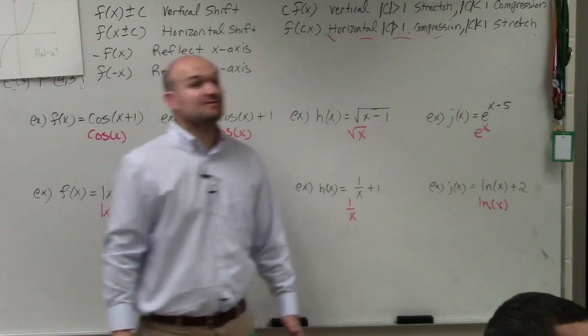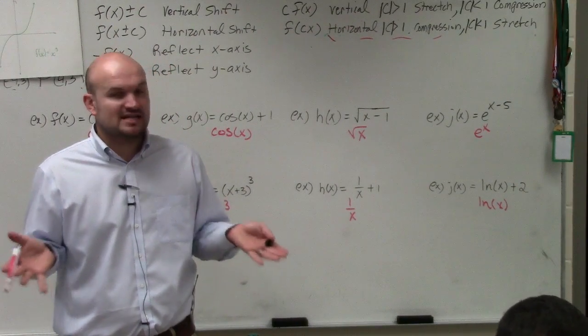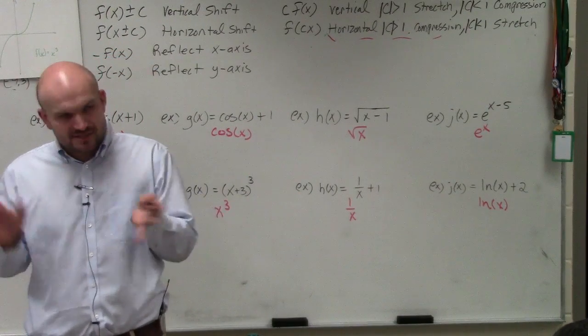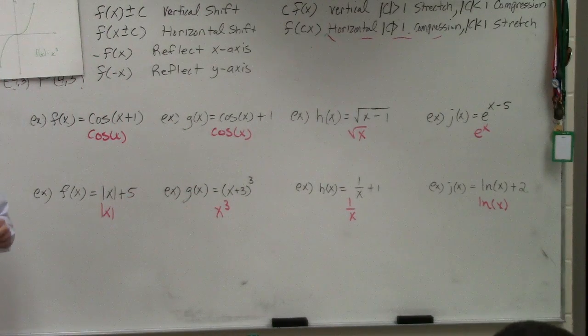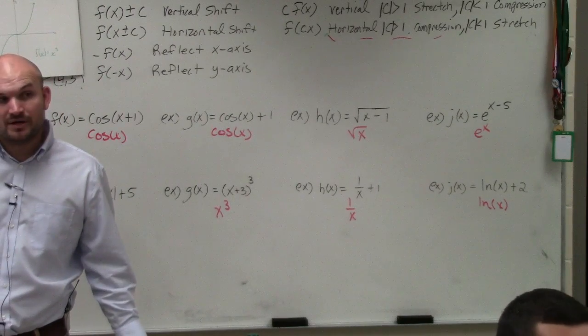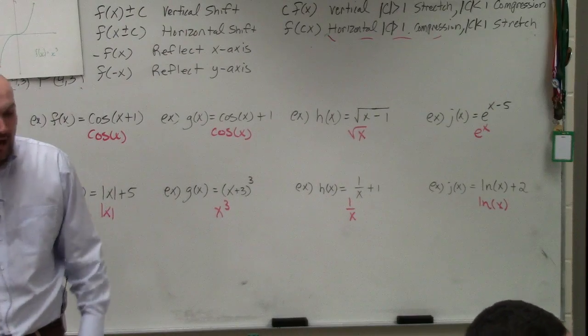You don't need to understand what the function is, you just need to understand what is the function that's being transformed, right? So if you're still confused on e to the x or ln of x, you don't remember those, that's okay. It doesn't really matter at this point in time. All we need to do is identify is my c, this random number, is that being added or subtracted inside or outside of the function.